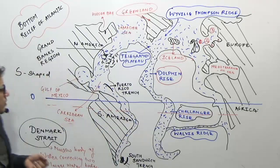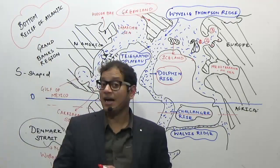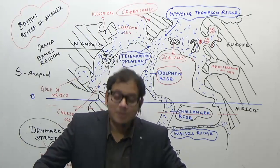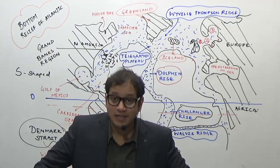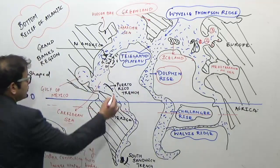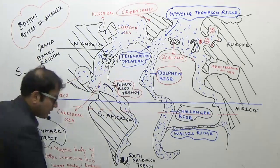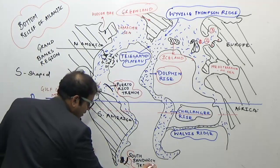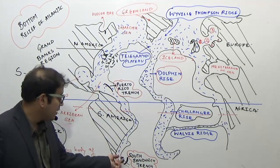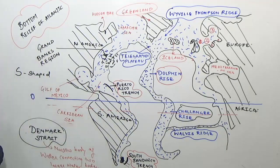Now coming to the trenches: the important trenches in the Atlantic include the Nares Trench or Puerto Rico Trench, which is the deepest part of the Atlantic Ocean, located in the middle part of the Atlantic. Another important trench is the South Sandwich Trench, near the southern tip of South America near the Falkland Islands.